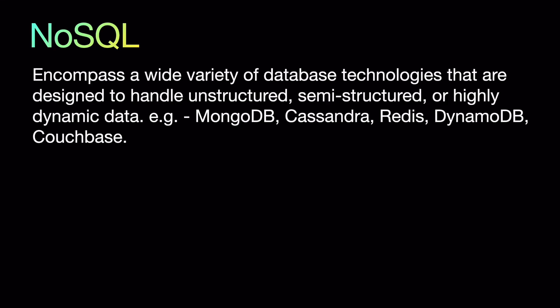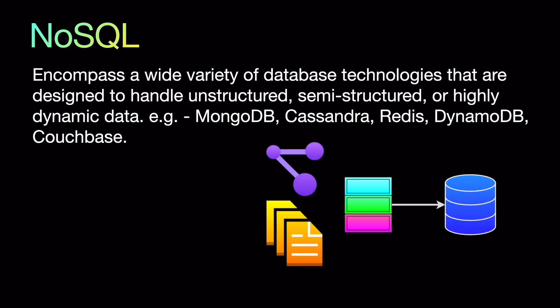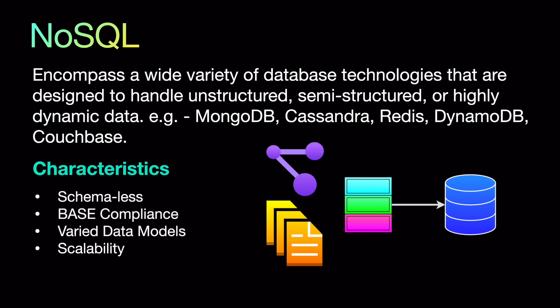NoSQL encompasses a wide variety of database technologies. It is not a specific database technology — anything which is not SQL is considered NoSQL. Types include time series databases, document databases, multimodal databases, and geospatial databases. These are all designed to handle unstructured, semi-structured, or highly dynamic data. Examples include MongoDB, Cassandra, Redis, DynamoDB, and Couchbase.